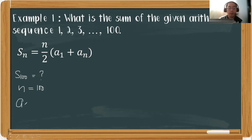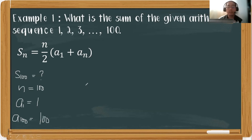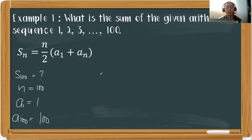What is a sub 1? The a sub 1 is the first term, which is 1. And what is a sub 100? That is 100. Take note that the requirement of solving Arithmetic Series is the first term and the specific last term of the given problem. As for this problem, we are looking for the 100th term, so our ending term is a sub 100.